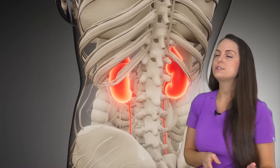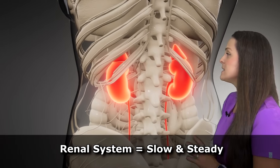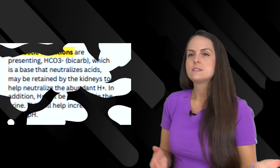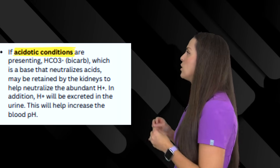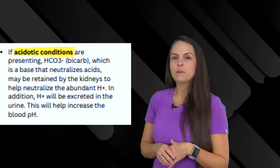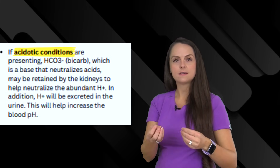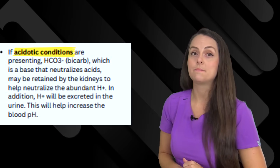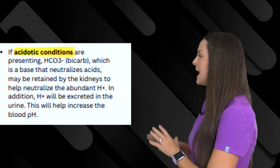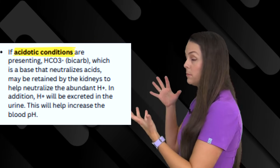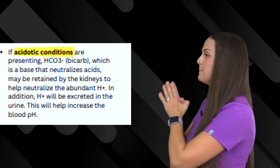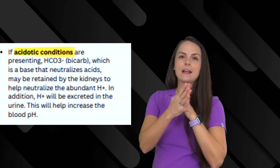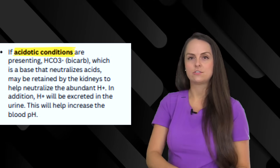The renal system is the slow and steady system — once it takes over it does a good job, but it can take up to days. What the renal system can do is manipulate the bicarb (HCO3) levels. Since HCO3 is basic and neutralizes acids, in acidotic conditions like metabolic acidosis the kidneys can start to retain bicarb to help neutralize those acids and increase blood pH. The nephrons within the kidneys can also start tweaking hydrogen ion concentration by excreting extra hydrogen ions.